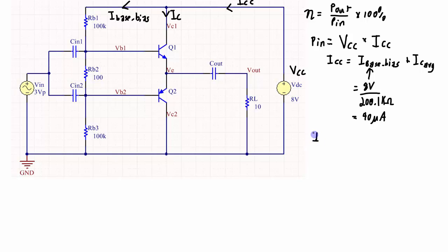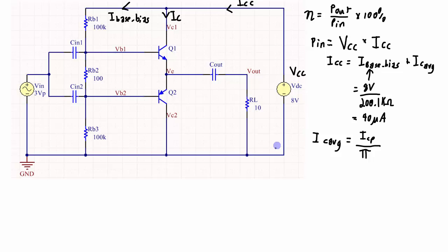IC average is the current here. Remember that IC average is a half wave rectified signal, so it's the peak current divided by pi. In this circuit we won't have clipping because my input voltage is a 3 volt peak signal. The maximum output that I can have is a 4 volt peak signal. So with a 3 volt peak signal I'll have a 3 volt peak output approximately.